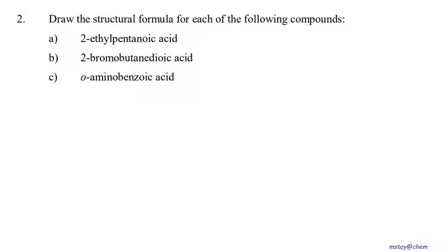Let's start with tutorial question number two: draw the structural formula for each of the following compounds. Drawing the structure is very important, so you need to know the prefixes that represent the number of carbons. For question 2a — 2-ethylpentanoic acid — pentane consists of five carbons, so let's draw five carbons first.